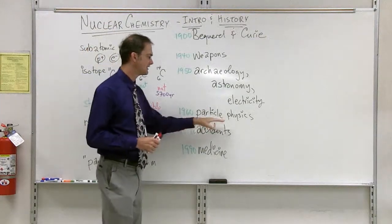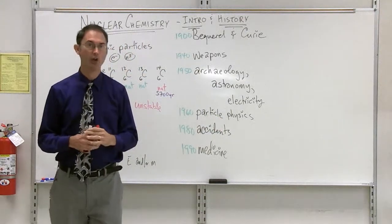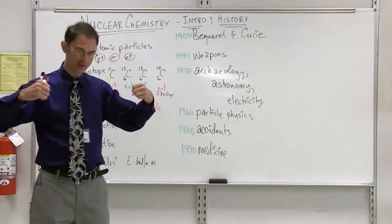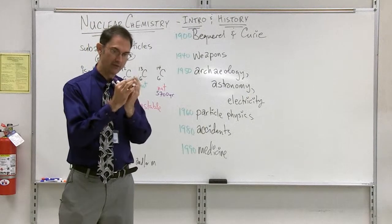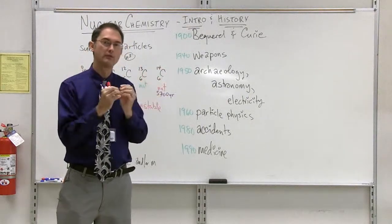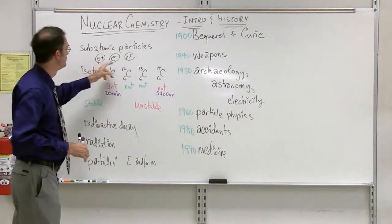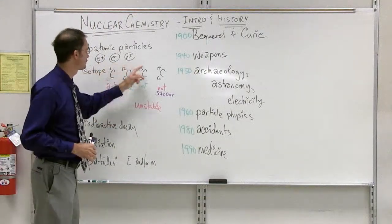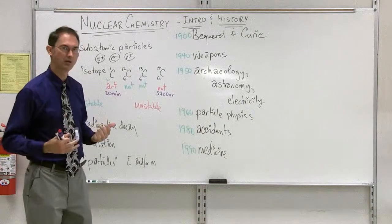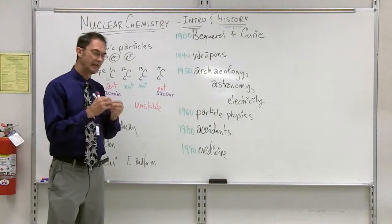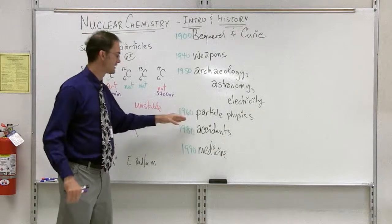In 1960, particle physics became an important field of study where atoms of carbon, for example, would be smashed together with great amounts of energy, and then the results would be splattered everywhere. The results of what came out would be protons, neutrons, electrons, different isotopes, but also very different types of particles. So the very inner core of that nucleus was studied in the 1960s.